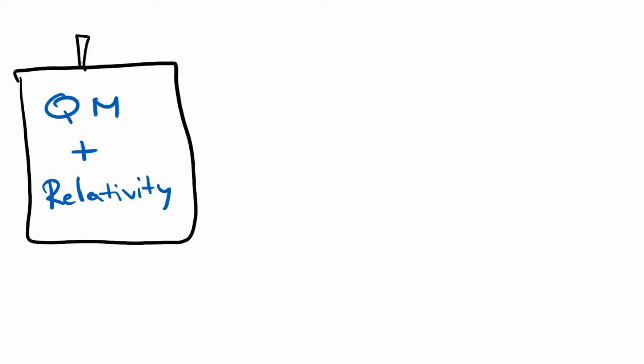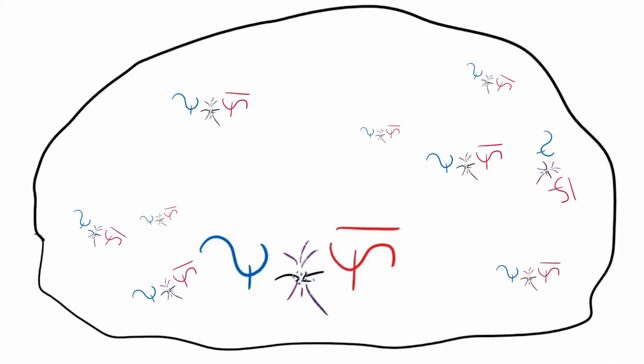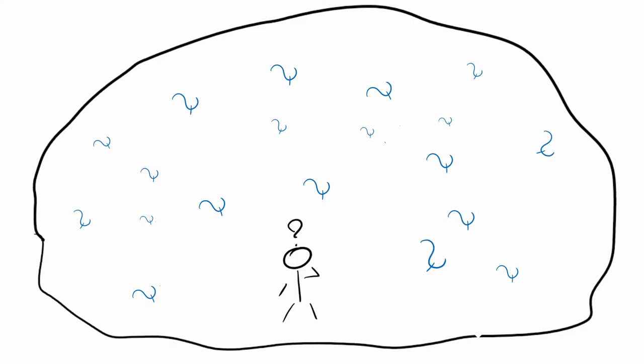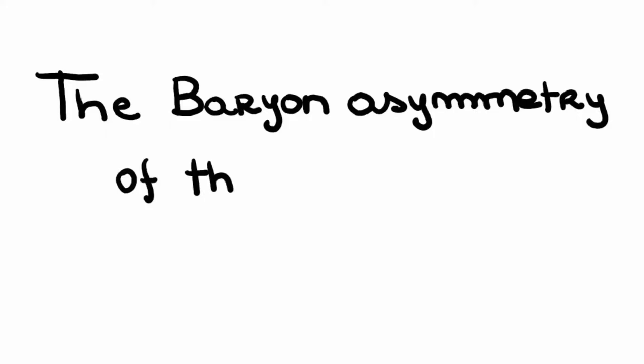Dirac hinted that the universe could consist of equal amounts of matter and antimatter. However, for some unknown reason, human experience is confined almost entirely to matter. This clear bias is known as the baryon asymmetry of the universe. So what happened? Where's antimatter?